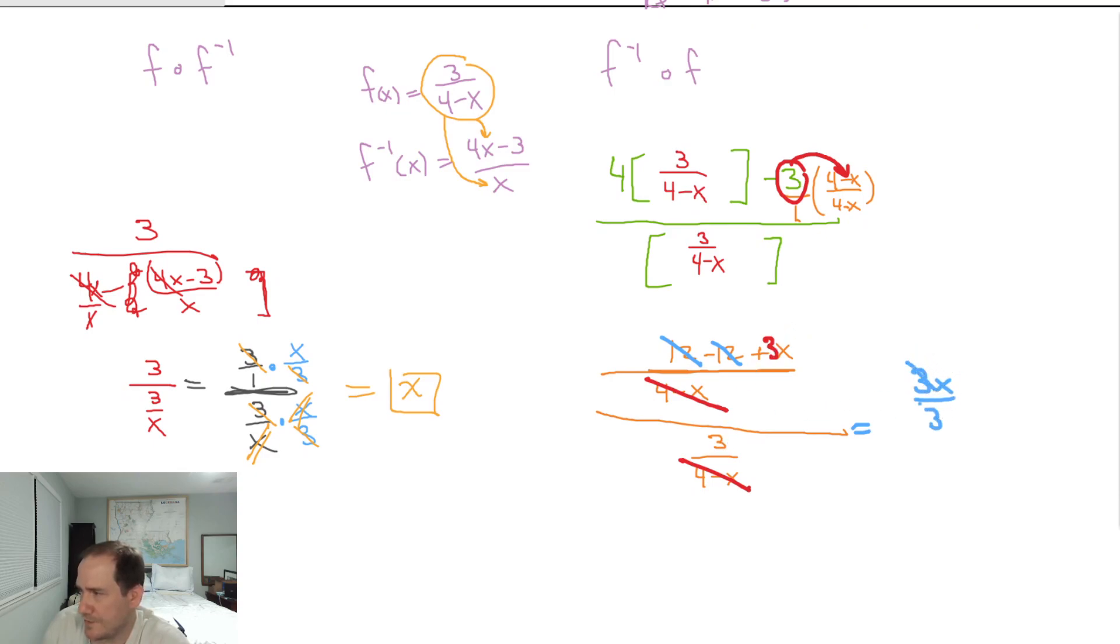And as soon as you cancel those 3's, you get plain old x. Like we wanted. So there's the composition that justifies that these functions truly are inverses of one another. And then we're done. I think we did it all. Alright. I hope this was helpful. See you tomorrow.